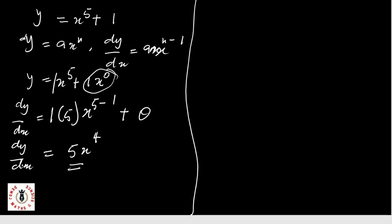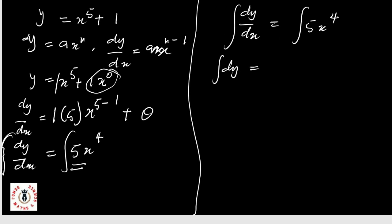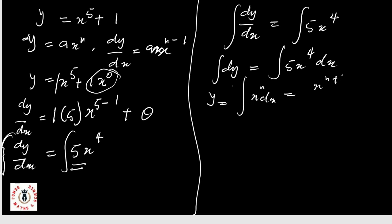Now let's integrate this result. To integrate dy/dx, I place an integral sign on both sides: the integral of dy equals the integral of 5x raised to power four dx. This gives the integral of dy equals the integral of 5x raised to power four dx. Using our formula — the integral of x raised to power n dx equals x raised to power n plus one over n plus one plus C — we apply it here.